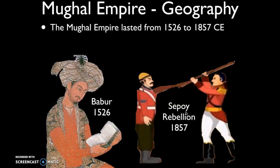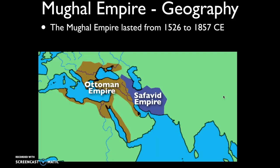The Mughal Empire lasted from 1526 to 1857, spanning much of Period 4 and into Period 5. Towards the latter half of this period, the Mughals were slowly taken over by the British East India Company. The empire ultimately collapsed when the British took over and ruled India following the Sepoy Rebellion in 1857.